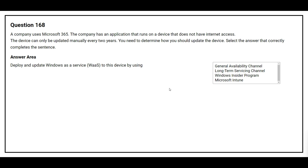Question number 168. A company uses Microsoft 365. The company has an application that runs on a device that does not have internet access. The device can only be updated manually every two years. You need to determine how you should update the device. To deploy and update Windows as a service to this device, the correct answer is: long-term servicing channel.